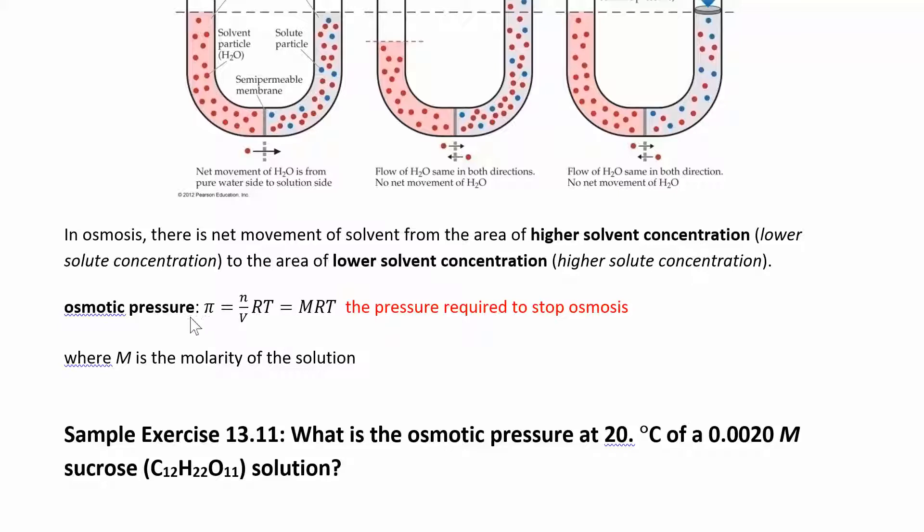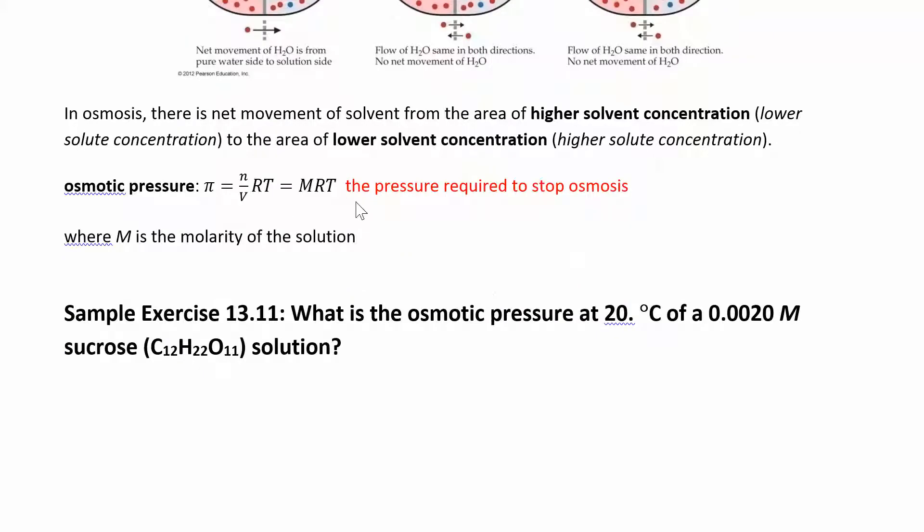Osmotic pressure is π = (n/v)RT. n/v is moles over liters, which is molarity. R is the gas constant, and T is temperature. This looks like PV = nRT but for osmotic pressure we use π (not 3.14). The pressure is in atm, n/v is molar concentration, R is 0.0821 liters atmospheres per mole kelvin, so watch your units.